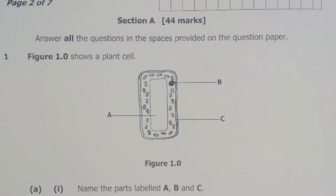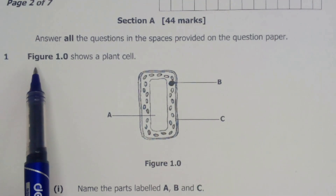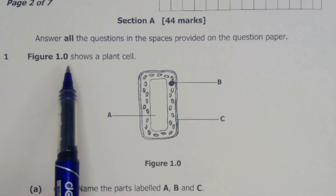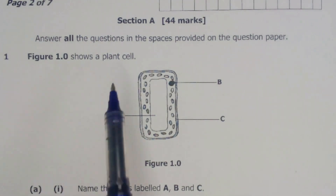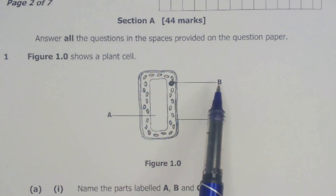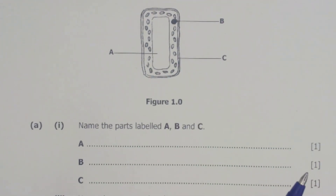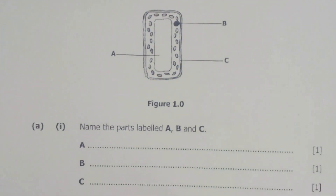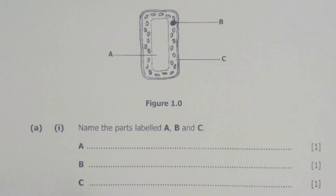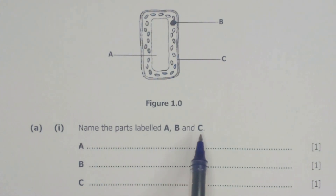This is question number 1, and question number 1 has figure 1.0 which shows the plant cell labeled A, B, and C. The first question is A1, which reads: name the parts labeled A, B, and C.